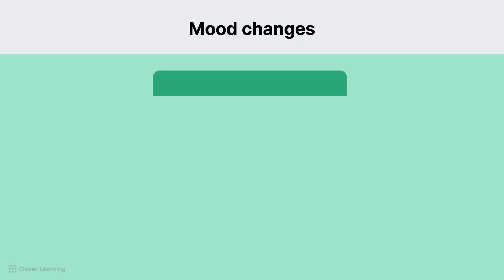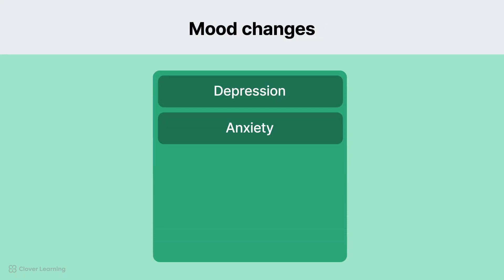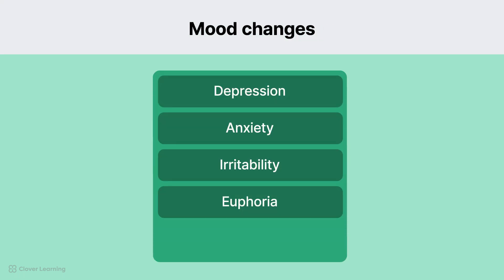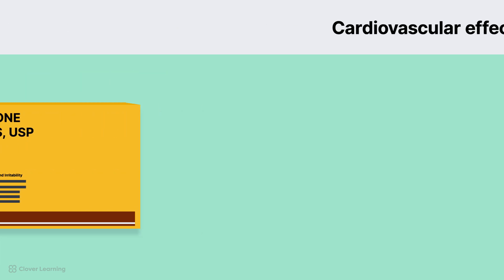Mood changes include depression, anxiety, irritability, euphoria, and excitability. For example, the corticosteroid prednisone can cause mood swings and irritability.